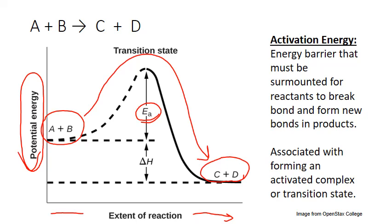The activation energy is separate from the heat that may be released or required in the net process — that is your enthalpy change, delta H. This is an example of an exothermic reaction where the products are actually lower in energy than our reactants and result in a net release of energy. But notice that we still require a certain amount of energy just to get those bonds broken and new bonds formed to get to our products. That is what activation energy is.